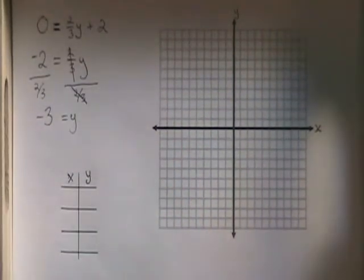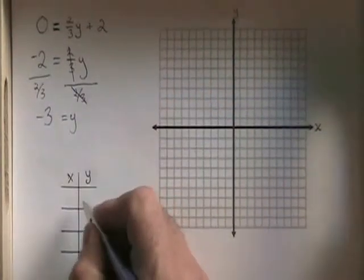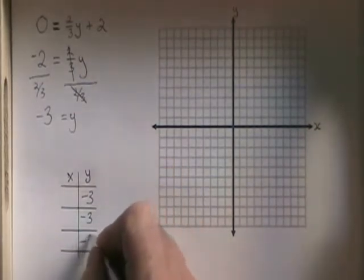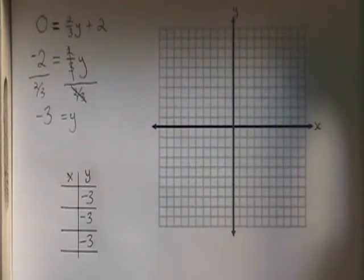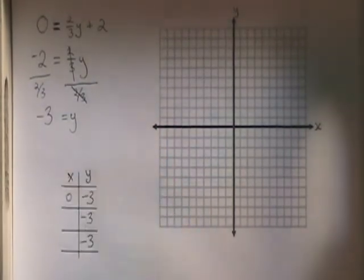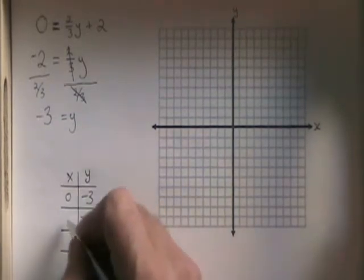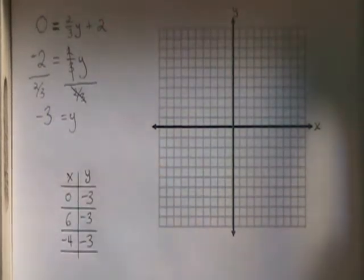Now that I have this statement, y equals number, y equals negative 3, I can fill in my table all at once. I put negative 3 all the way down the y side of the table. On the x side, I can put any numbers I want, but I have to make sure that 0 is one of them, because I have to show all intercepts. I'm going to put x equals 6 and x equals negative 4 for the other two x coordinates.